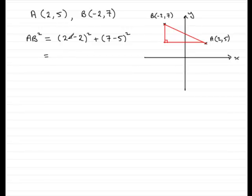If we work this out, 2 minus minus 2, then that's going to be 4. 4 squared is 16. 7 take away 5 is 2. 2 squared is 4. So we've got 20. So therefore, AB is going to be equal to the square root of 20.